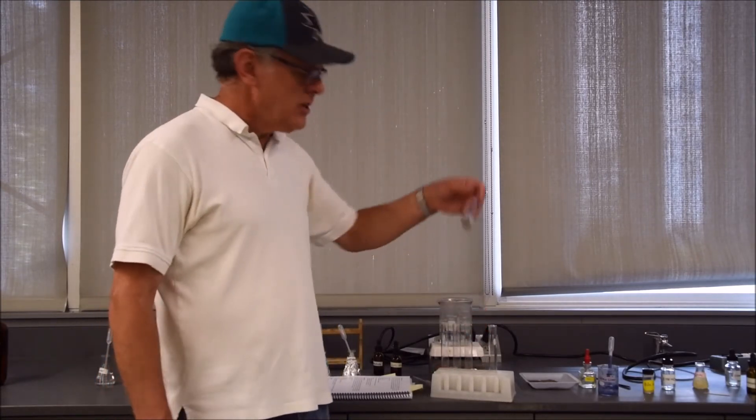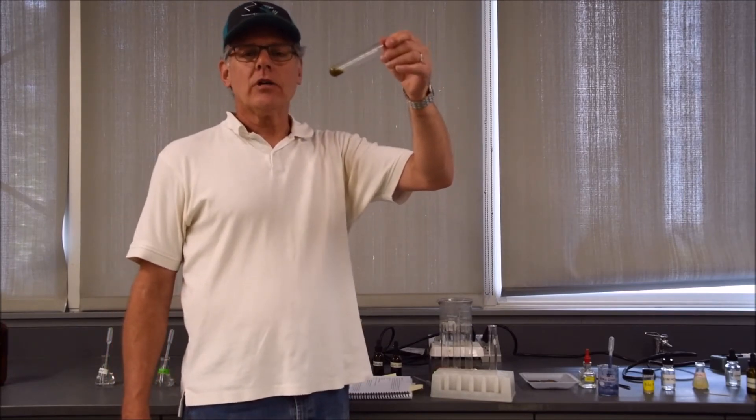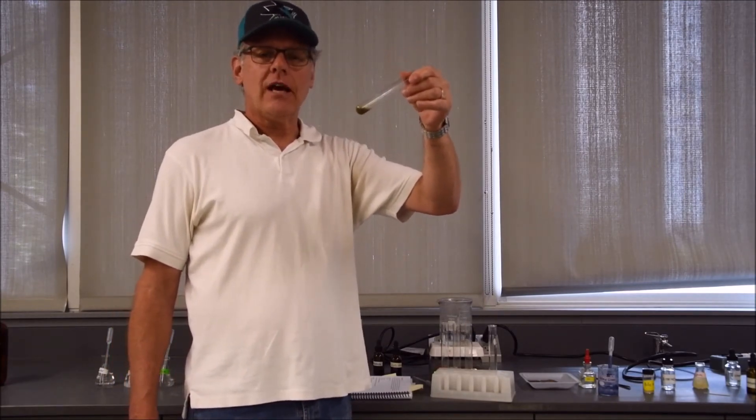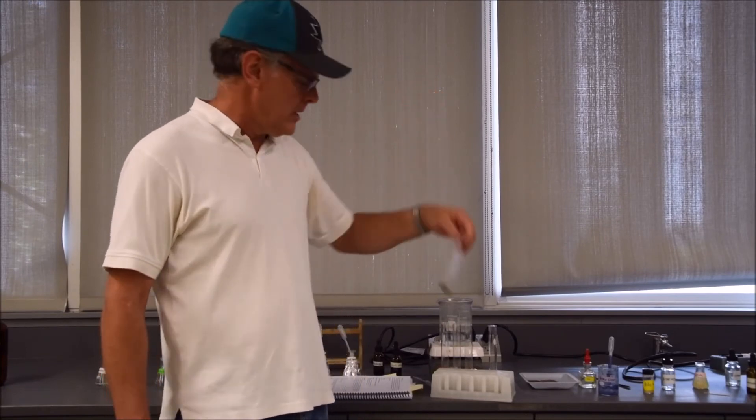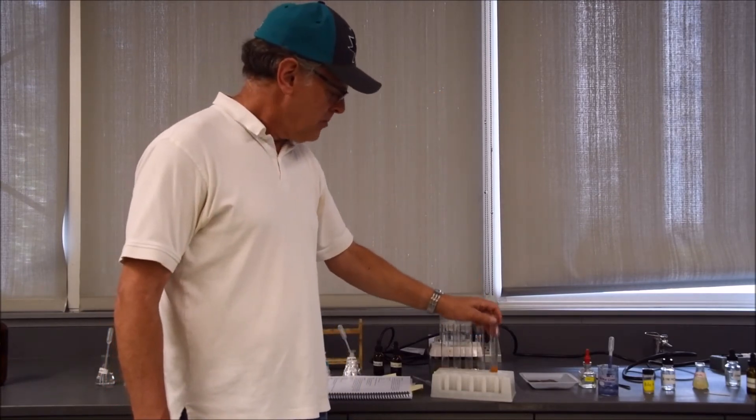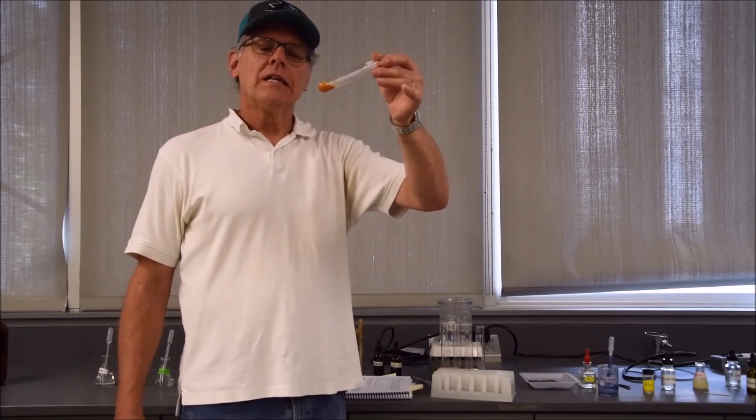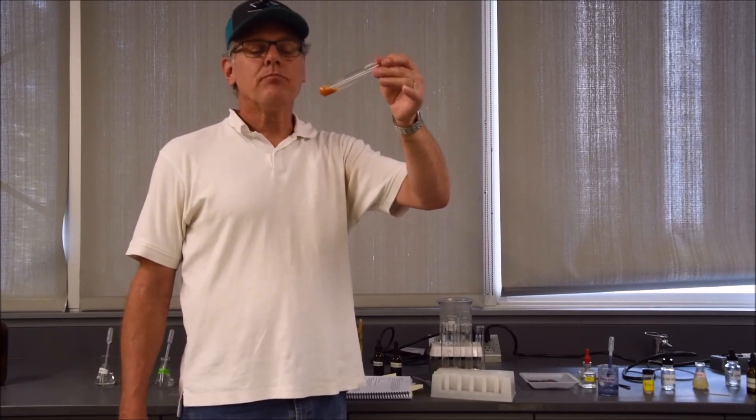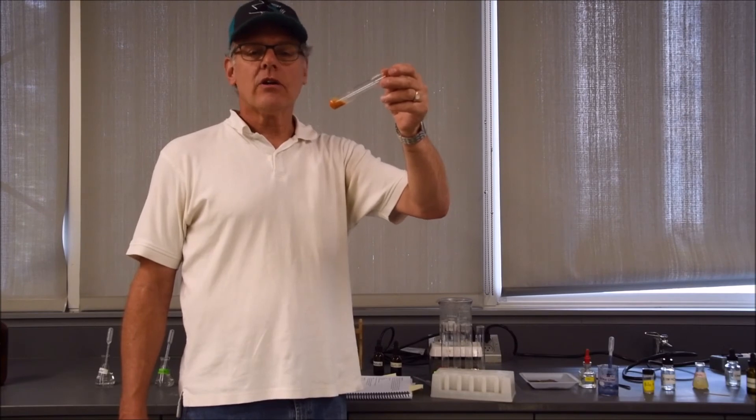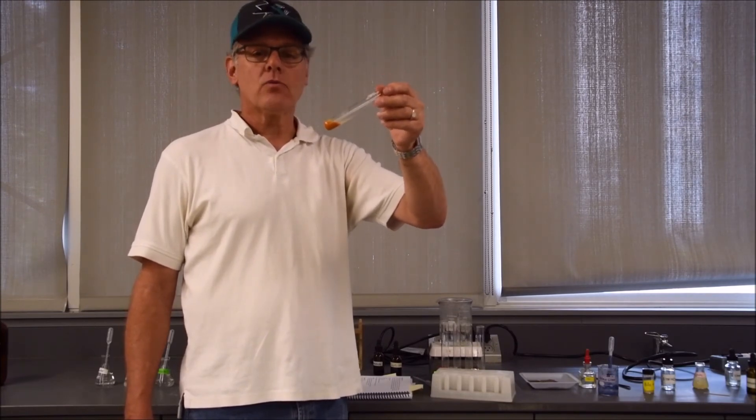Tube number four is onion juice, and this one also changed pretty dark, telling us that onion juice has a fair amount of monosaccharides present. Tube number five was a potato slice. There's a little bit of color change here, actually pretty decent, telling us that monosaccharides are present within potatoes as well.